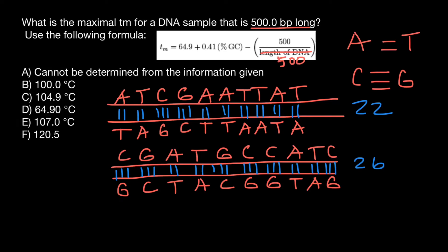And what is the maximum GC content? And it can be 100%. So let's put 100 here. What we have, 500 divided by 500 is going to be 1. And what we have here, 0.41 multiplied by 100 is going to be 41. 41 minus 1 is going to be 40. 64.9 plus 40 is going to be 104.9. And this is answer C.